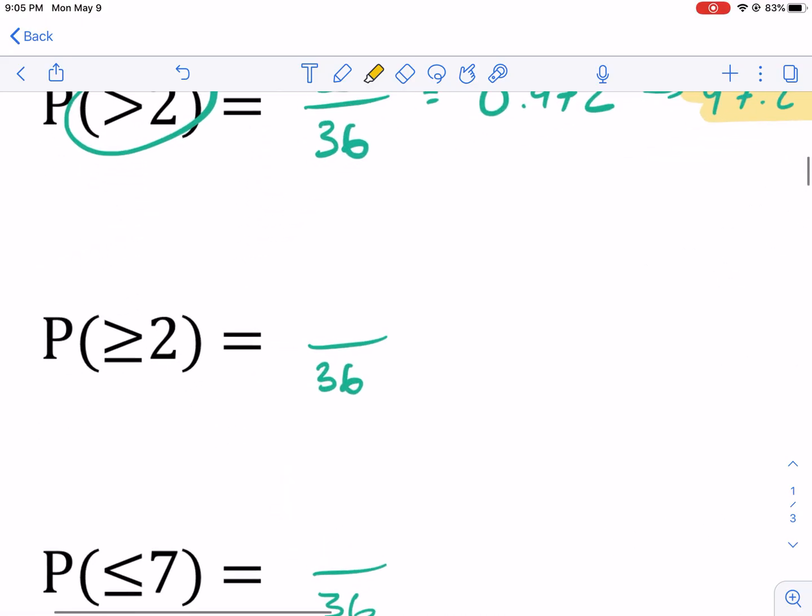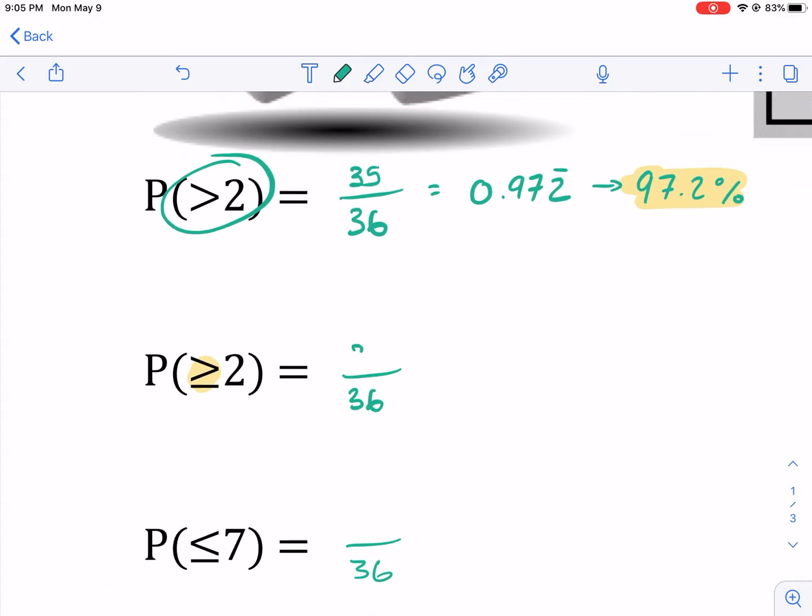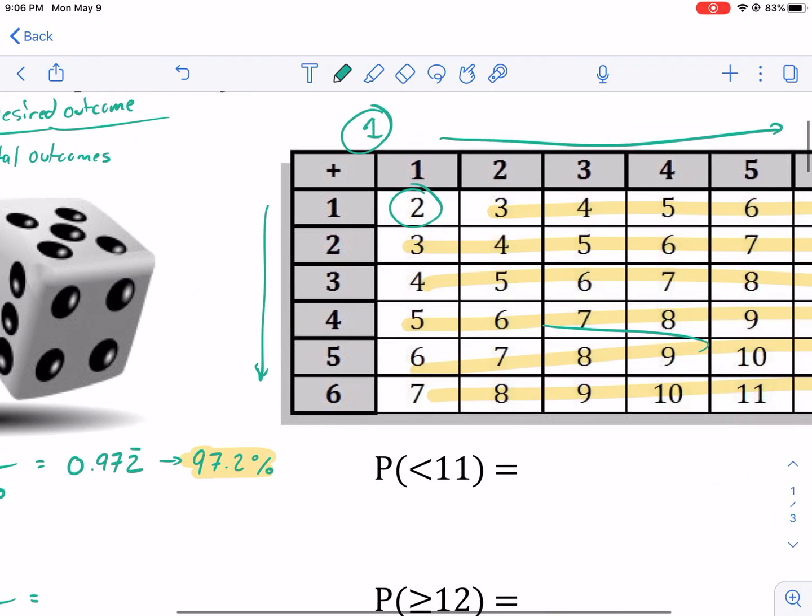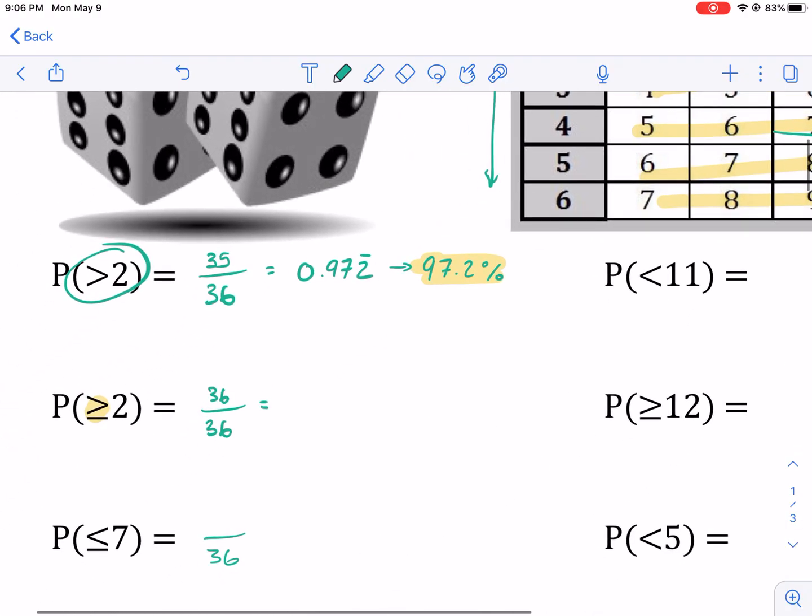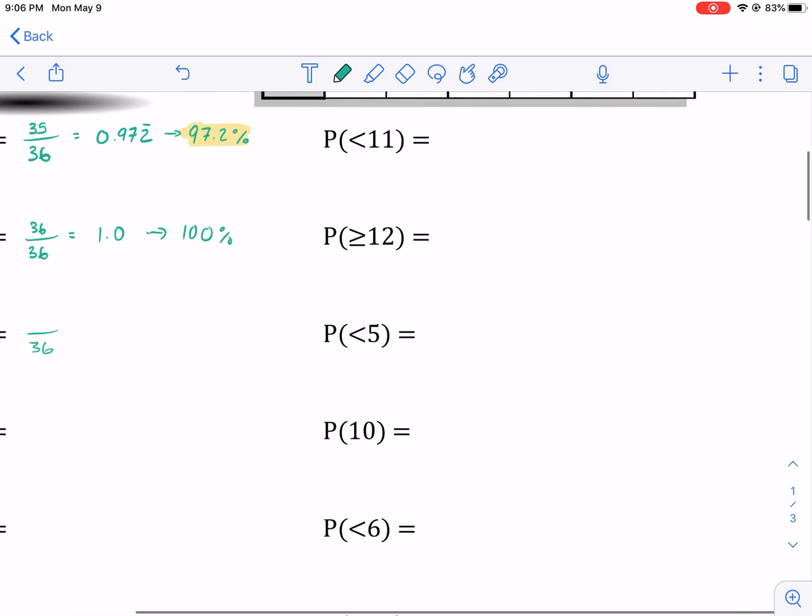Now let's go for two or greater. This is greater than or equal to two. Well, I hope you know that it's 36 out of 36. There's 36 options that are two or bigger. So that would be 1.0, 100%. You have a 100% chance of rolling a two or bigger. So that's all you're doing with these is you're looking for these particular outcomes.